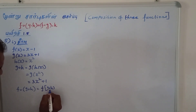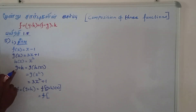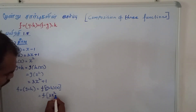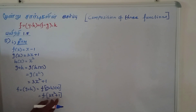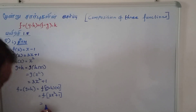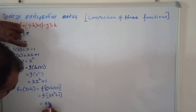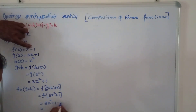G∘H of X — F of G∘H of X, G∘H of X gives 3x squared plus 1. F of x round, x in 2 by 3x squared plus 1. Substituting 3x squared plus 1 for x, x plus one minus one cancel.